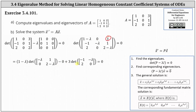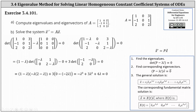We move to the last entry in row one, which is three. So we have plus three times the determinant of the matrix after deleting row one and column three, giving us the two by two matrix with entries negative one, negative lambda, two, and zero. Working left to right: one minus lambda times negative lambda times two minus lambda minus zero, plus three times negative one times zero minus negative lambda times two, all equal to zero.